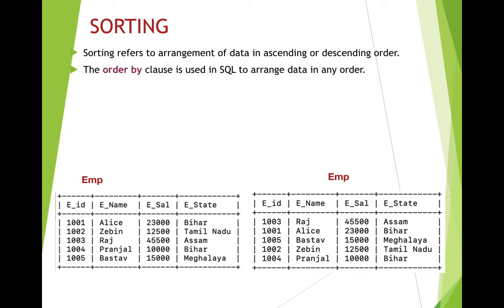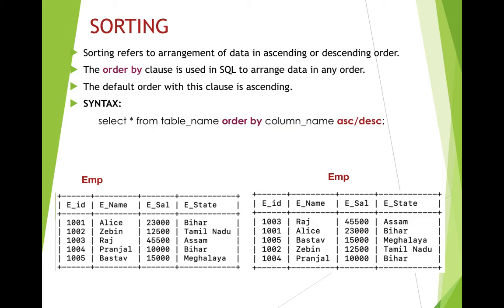For sorting in SQL, you require a clause called the ORDER BY clause. The ORDER BY clause is used to arrange data in any order. The default order with this clause is ascending — if you do not specify anything after ORDER BY, your data will be sorted in ascending order by default.